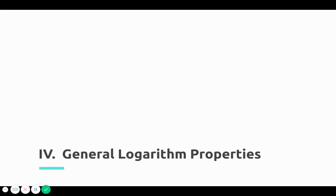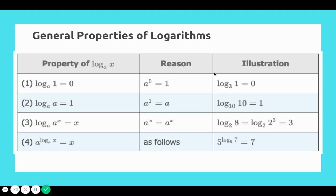Let's move on to general logarithmic properties. First: log base a of 1 equals 0. This makes sense because any base to the power of 0 gives us 1 — like log base 5 of 1 equals 0. So log base whatever of 1 equals 0.